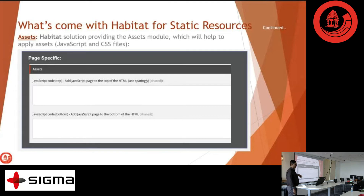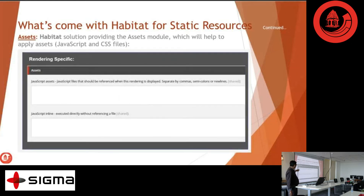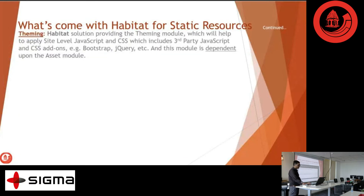With this Assets module, there are four or five templates available in the Habitat solution. There is a page-specific asset template where you can add a particular CSS URL into your content rendering or the page. You can add page-specific CSS, and there are rendering-specific things as well.